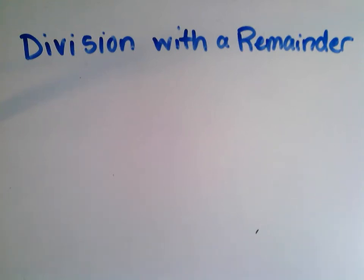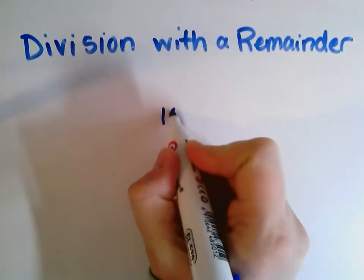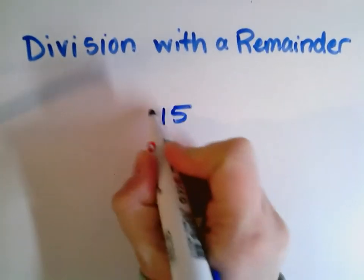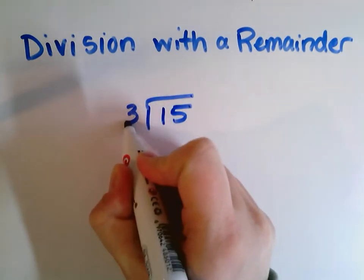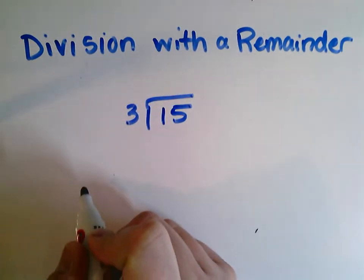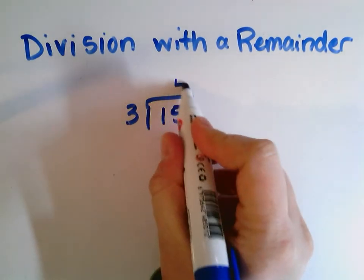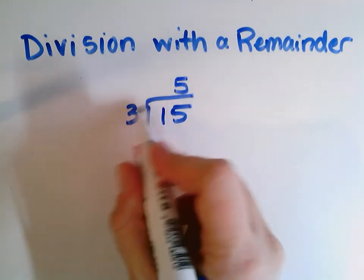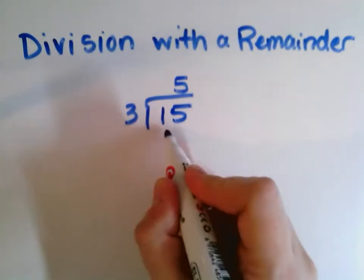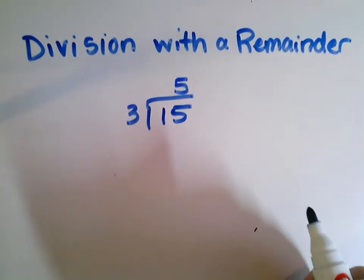You've been doing a great job of solving division problems. So a problem like 15 divided by 3 — you would think, well, 3 times 5 is 15, so my quotient is 5. 5 times 3 is 15. Nice and easy.